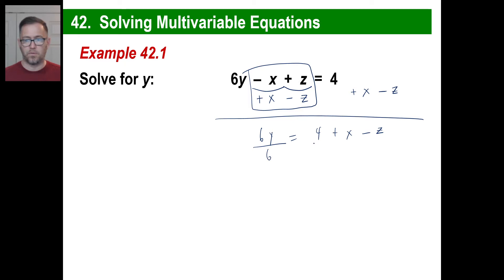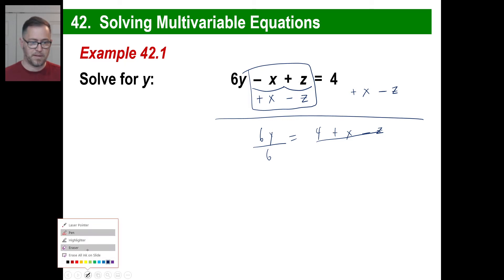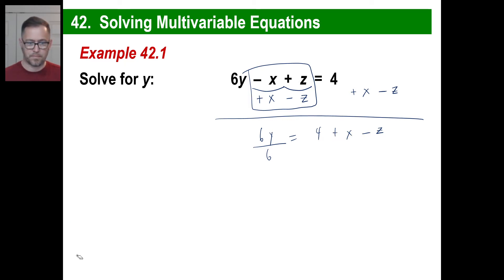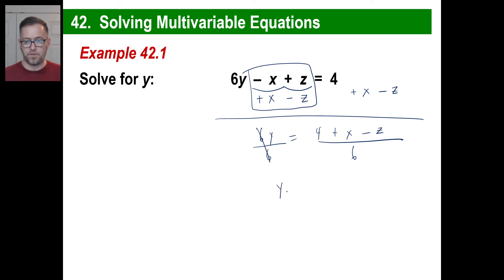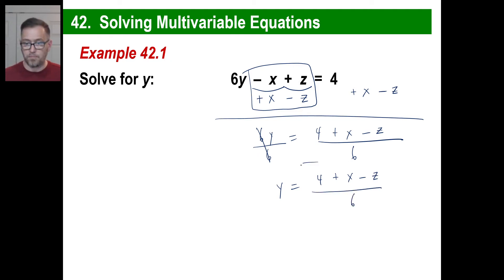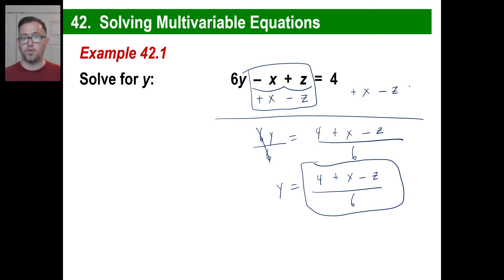And of course over here we're going to divide by 6 as well. We have the answer now: y is equal to 4 plus x minus z, all over 6. And that's it. Now, what is the actual number value? I have no idea — it depends on what x and z are. You could plug in numbers for x and z and see if your equation works.